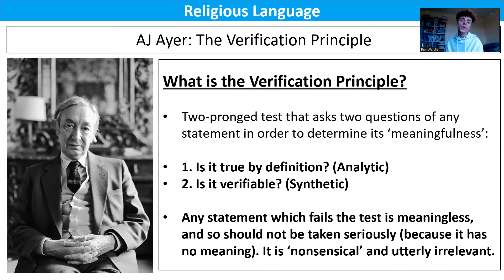He's not even saying that the claim is wrong — he's saying there's no point even considering it, because it's meaningless, it does not meet the verification principle's criteria. As Ayer himself said: 'no sentence which purports to describe the nature of a transcendent God can possess any literal significance.' So any language about God cannot possess any literal significance. Religious language is dismissed as meaningless and deemed nonsensical. It also means that ethical statements, very important within religions, are simply expressions of emotion — he does not believe there is any objective goodness, or objective right and wrong.